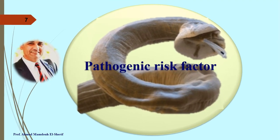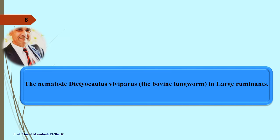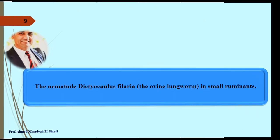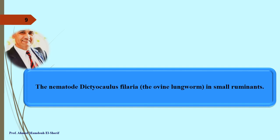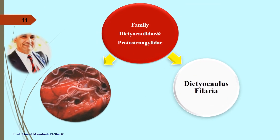The causative agents: Dictocaulus viviparus is the proven lung worm in large ruminants, belonging to family Dictocaulidae and Protostrongylidae. Dictocaulus filaria is the lung worm in small ruminants, also belonging to family Dictocaulidae and Protostrongylidae.